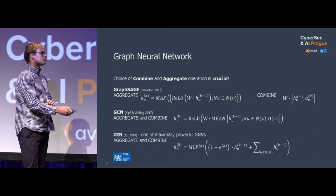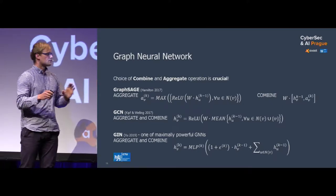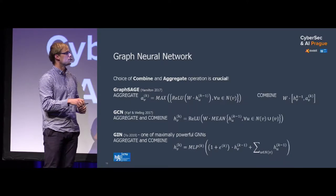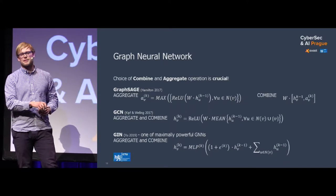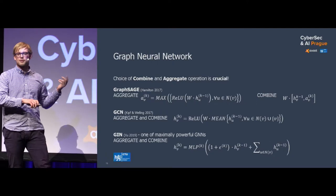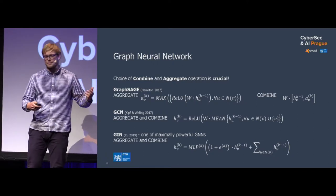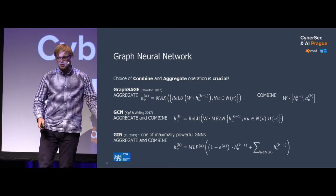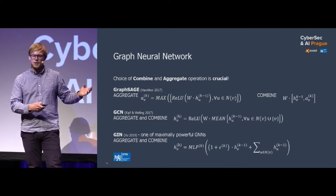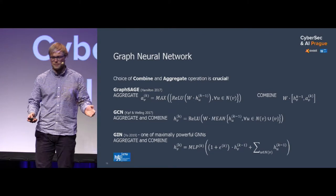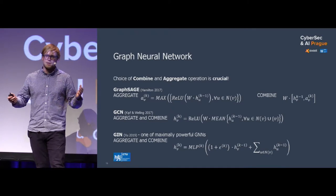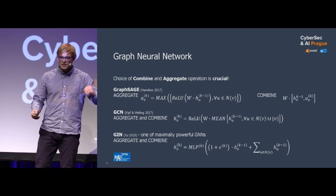The choice of those two steps — transformation and aggregation — is very crucial for the neural network to actually work. As examples, I picked three. Some people use a neural network to process the features of the neighborhood, then take a maximum of those, and combine them with simple weights. Some people first take the mean of all the vectors around, and then use a neural network to combine the representations. The last one came from a paper that shows a mathematical proof that it is the most powerful GNN, able to solve most problems. In practice, you usually have to add something more to tweak it for your specific problem.